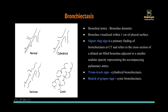Moving on to bronchiectasis — there are different types that have been described; it is usually a spectrum. Normally, the bronchi gradually taper towards the periphery. The first stage is cylindrical bronchiectasis, where there is uniform dilatation of the bronchi. Gradually, segmental areas dilate more than the adjacent segment, giving rise to varicose bronchiectasis. Lastly, when they are dilated beyond a particular capacity, they become cystic bronchiectasis, where they appear as lung cysts or cavities. So it progresses from cylindrical to cystic.